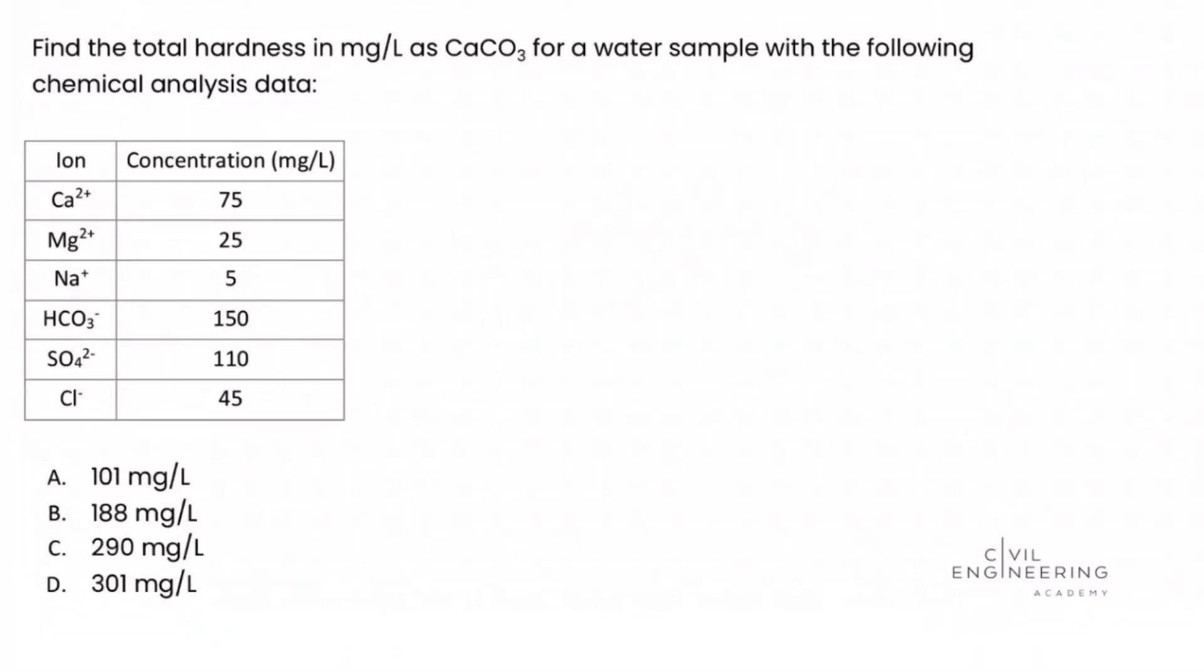Welcome back to Civil Engineering Academy. This is Matt, and today we work a problem from the water resources depth section of the Civil PE exam. Let's dive in. We are asked to find the total hardness in milligram per liter as calcium carbonate for a water sample with the following chemical analysis data, and we're presented with a chart which contains several ions, each with a concentration in milligrams per liter.